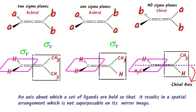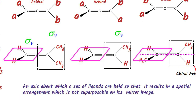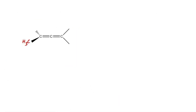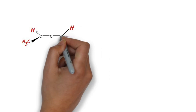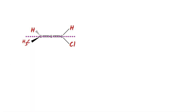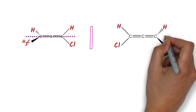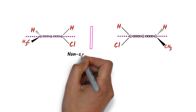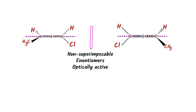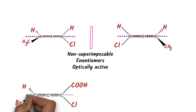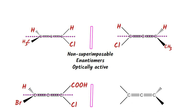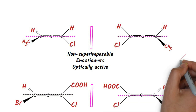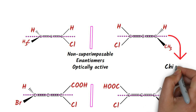The chiral axis is an axis about which a set of ligands are held so that it results in a special arrangement which is not superimposable on its mirror image. Because of this chiral axis, the molecule is chiral and optically active. Thus, if we take this allene which has different end substituents, it will have a chiral axis passing through the double bonded carbons. If we put a mirror in front of this allene, we will see the mirror image. Of course this will also have a chiral axis. These mirror images will be non-superimposable, hence enantiomers and optically active. These dash lines passing through the double bonded carbons represent the chiral axis.